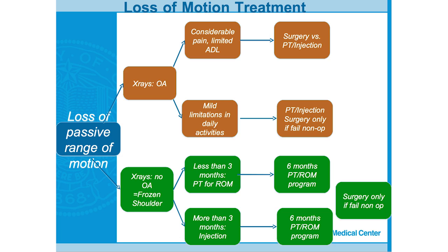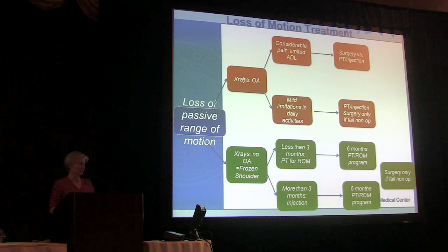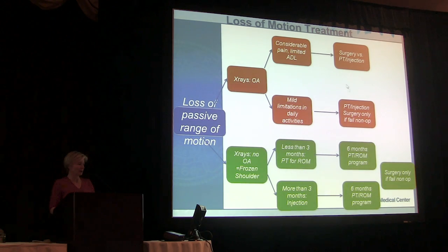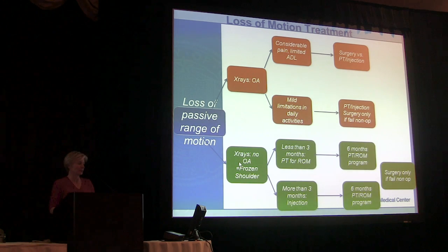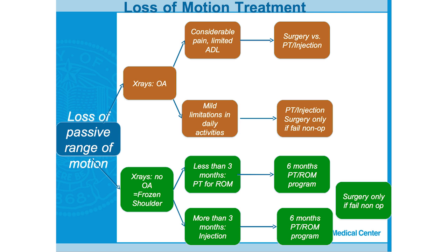For loss of motion, X-rays are a helpful first line: if there's arthritis, we go down the glenohumeral arthritis pathway; if there's no arthritis, we're probably dealing with frozen shoulder. Time course and age group differentiate them — older patients with slower onset suggests arthritis. Having patients hold a weight during X-rays can close down the joint space and better demonstrate arthritis. Non-operative treatment includes anti-inflammatories for pain control, physical therapy for mild to moderate arthritis, and glenohumeral joint injections.